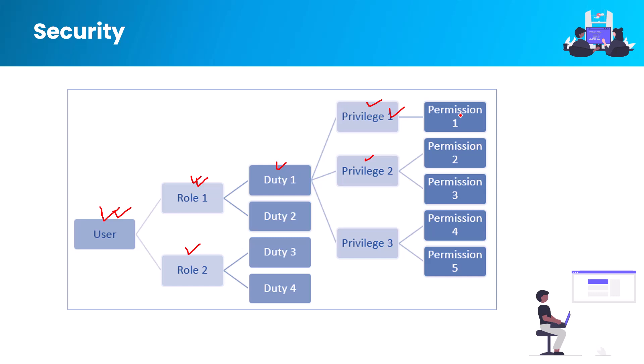If a user is not assigned to a role, they are unable to access the Finance and Operations application. To access the application and be assigned a role, a user must have an authenticated Microsoft Entra ID account associated with the application. Role-based security in Finance and Operations is aligned with the structure of an organization — users are assigned to a security role based on their job responsibilities, and depending on the user, one or many roles might be assigned.